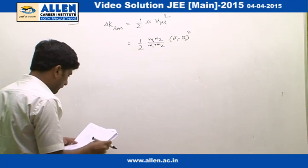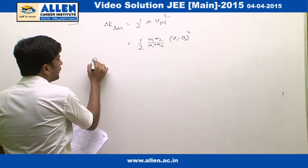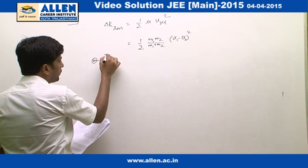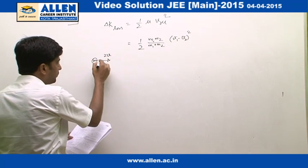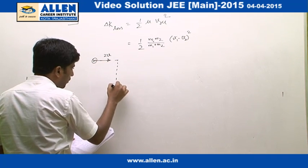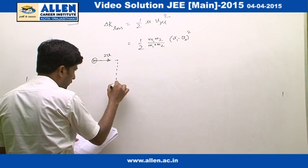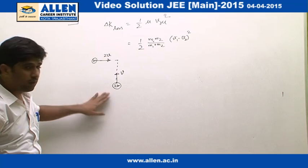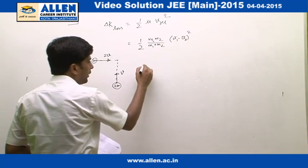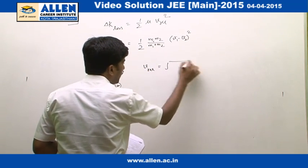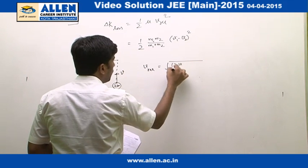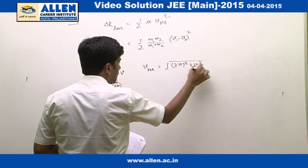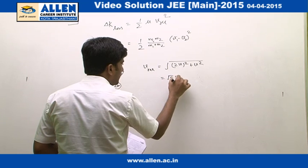In this question, initially first particle of mass M is moving with velocity 2V along x axis and another particle of mass 2M is moving with velocity V along the positive y axis. Therefore, magnitude of relative velocity will be given by under root 2V whole square plus V square that is root 5V square.